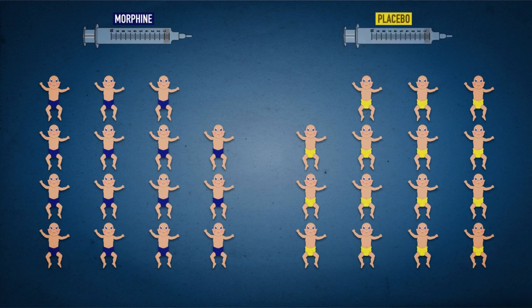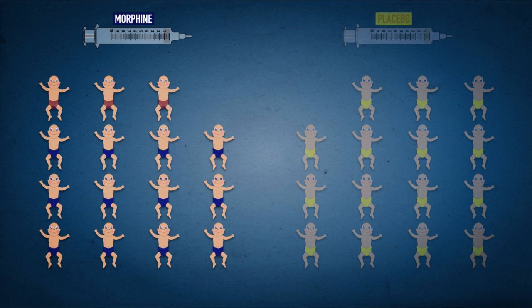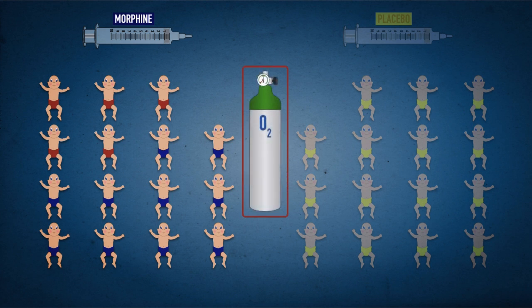Of the 15 babies given morphine, 3 developed long pauses in their breathing and needed help with their breathing. 5 of the babies given morphine also needed a significant increase in the amount of oxygen they were getting.